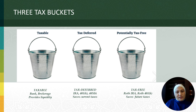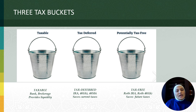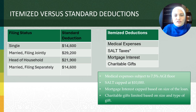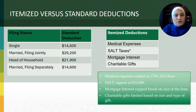Predicting the future tax bracket is challenging, but generally, tax-deferred accounts are beneficial if future tax rates are lower in retirement, while tax-free accounts are preferable if rates are higher. For most individuals, it is best to save in all three buckets for flexibility and greater options in the future. For the 2024 tax year, the standard deduction is $29,200 for joint filers, $21,900 for heads of households, and $14,600 for single filers.